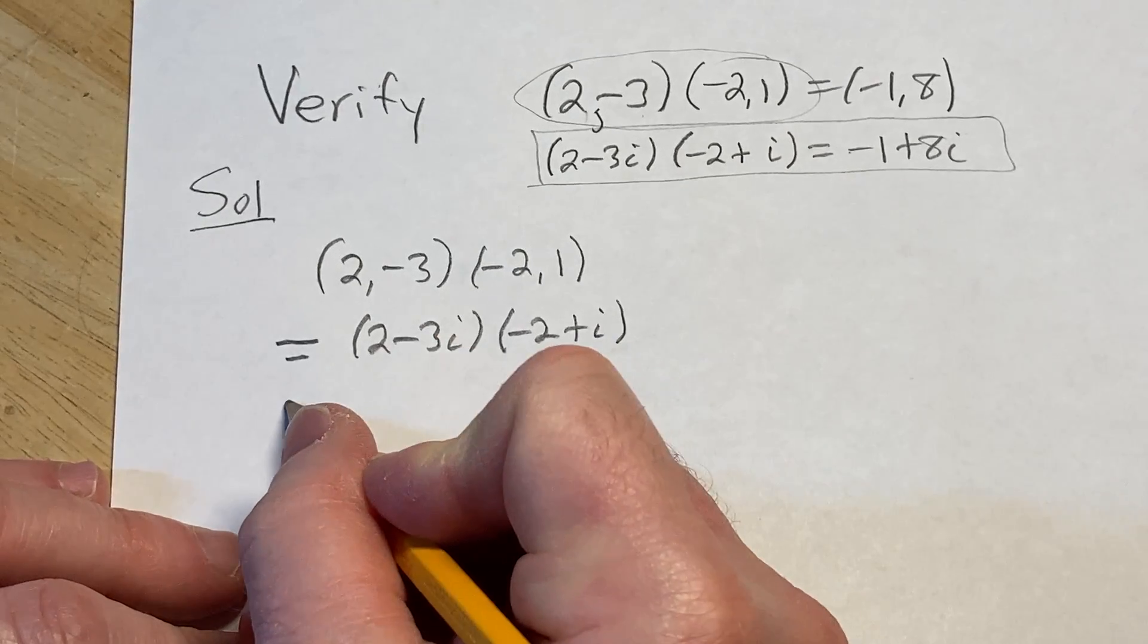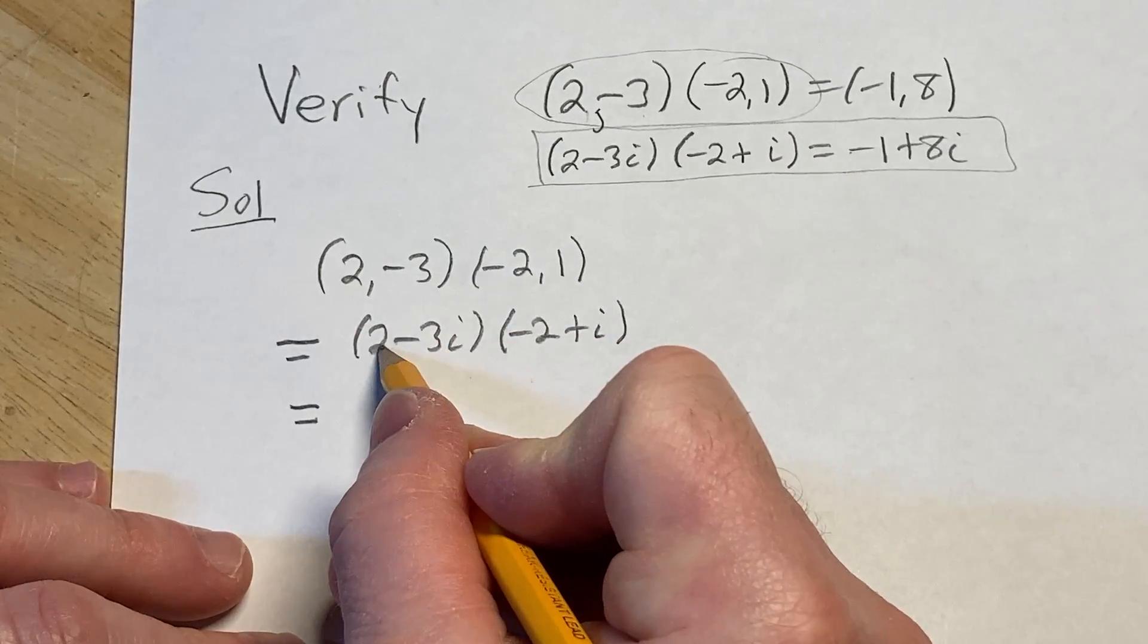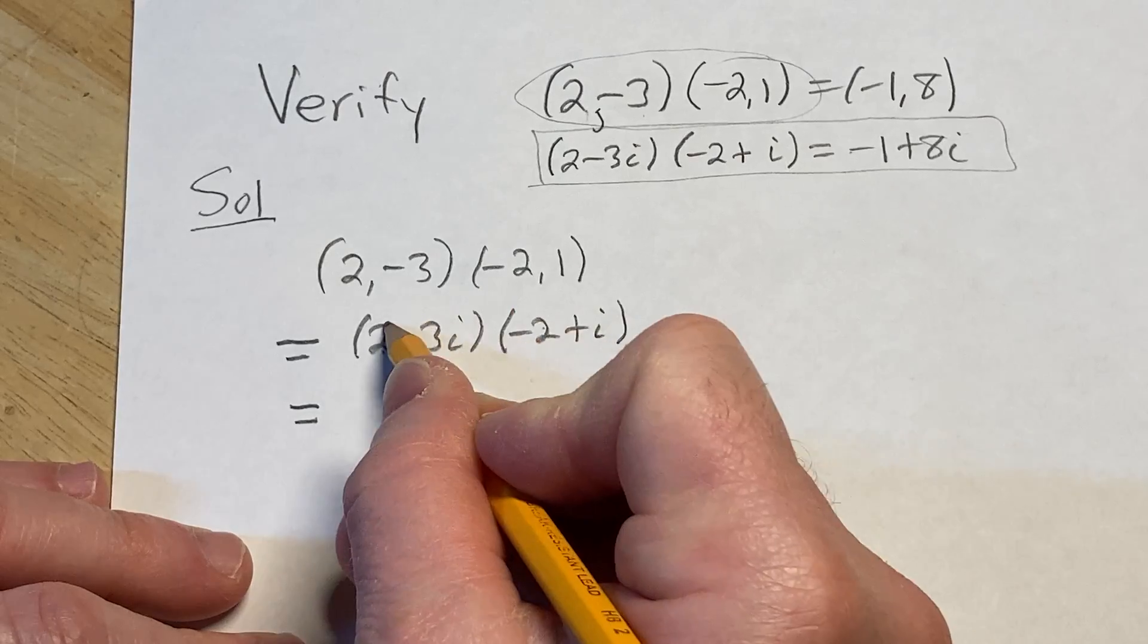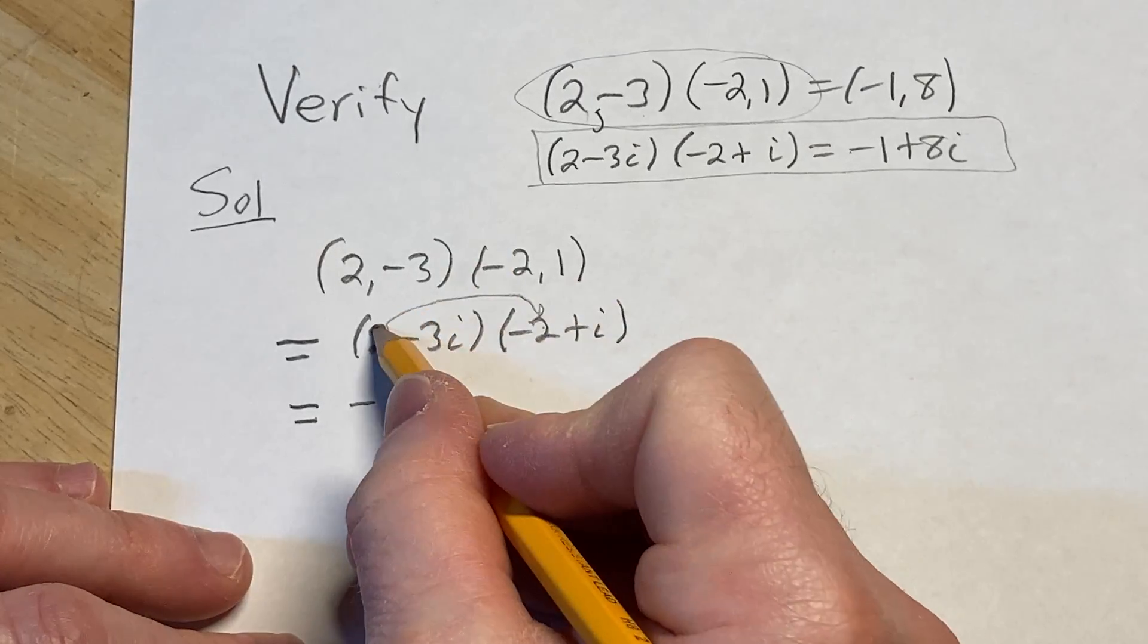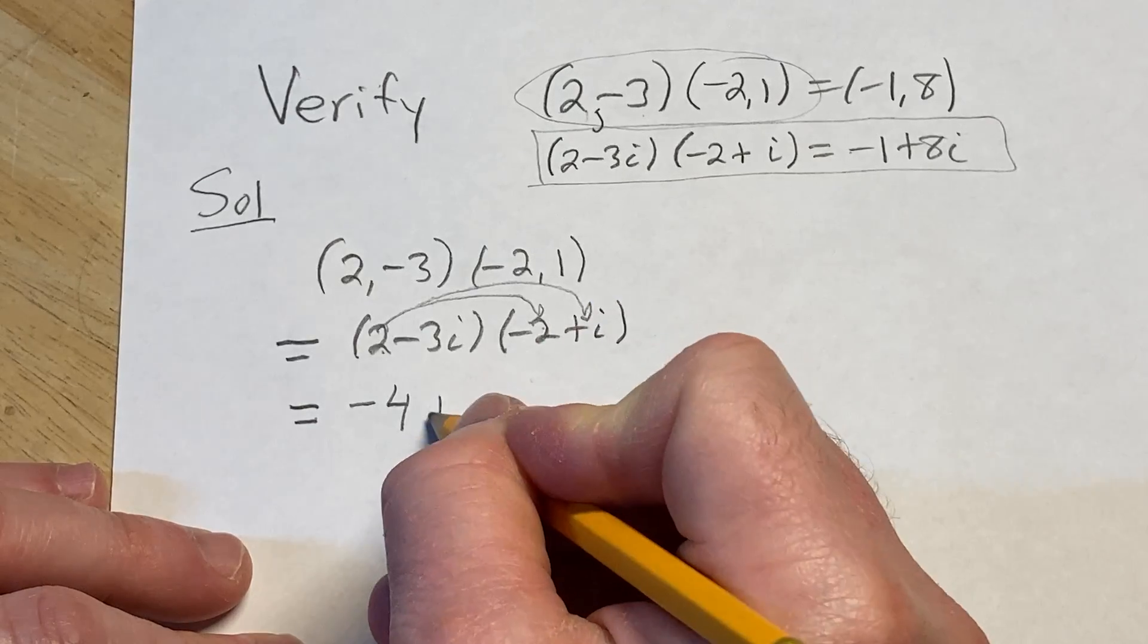And we're just going to distribute here. So we're going to do 2 times negative 2, that's going to give us negative 4, and then 2 times i is going to give us 2i.